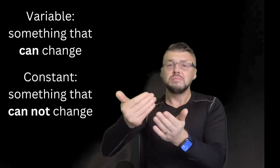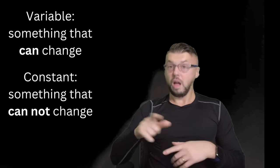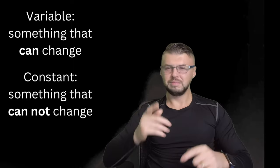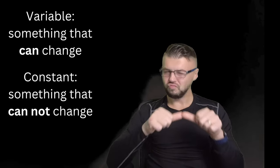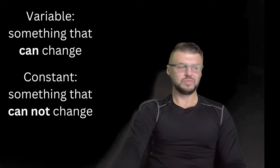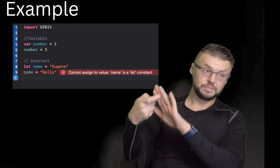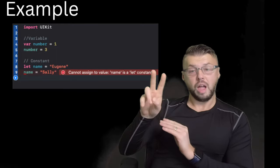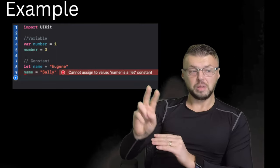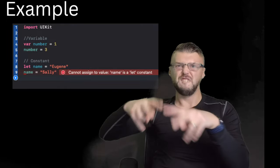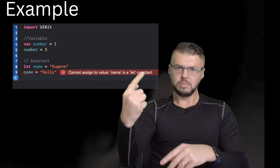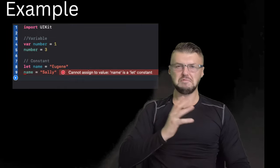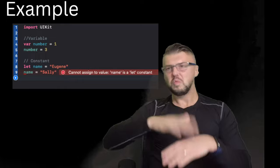For example, the value of a variable can change many times, but a constant cannot be changed in the program. It should stay the same. For example, we have a variable number that starts with var and the initial value is 1, and then later we change it to 3. It's fine, it's completely fine, Swift doesn't give us any warnings.